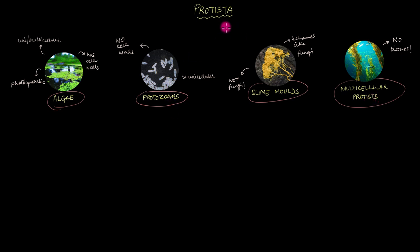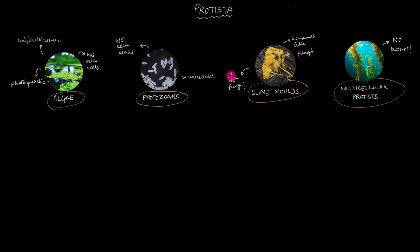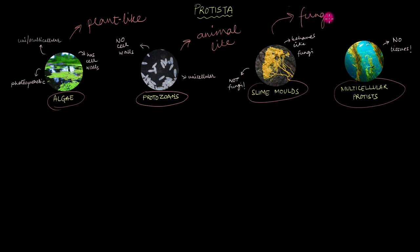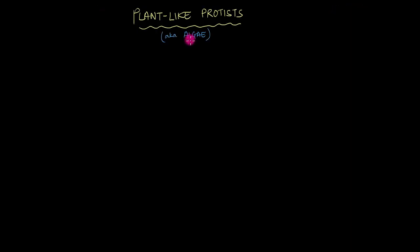Because of this, it's very difficult to have a strict set of common features for protists, like how we usually have for every other kingdom. Generally, protists have been broadly classified into three different categories: plant-like protists, animal-like protists, and fungus-like protists. Let's start with the plant-like ones first, aka all the algae.